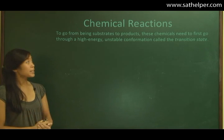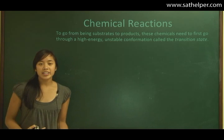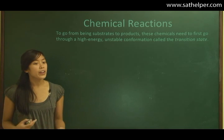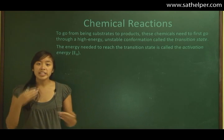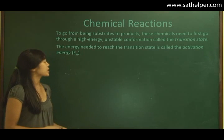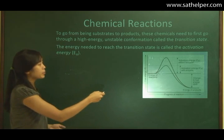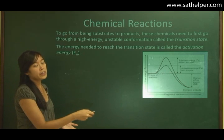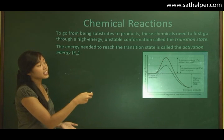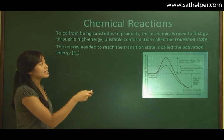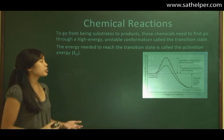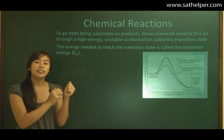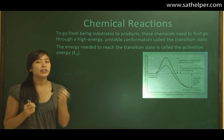To go from substrates to products, chemicals first need to go through a high-energy, very unstable state called the transition state. The energy needed to reach the transition state is called the activation energy, or EA. Looking at the graph, we can see the energy of the reactants and the energy of the products — the reaction gives off energy overall, but first must pass through the transition state. The transition state is so high energy and unstable because it's somewhere in between the reactants and the products, with bonds that are neither fully formed nor fully broken.